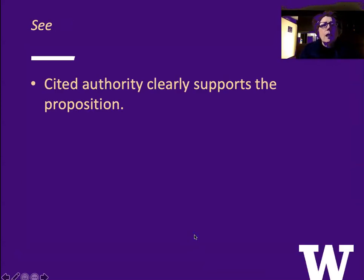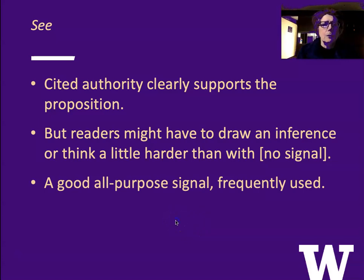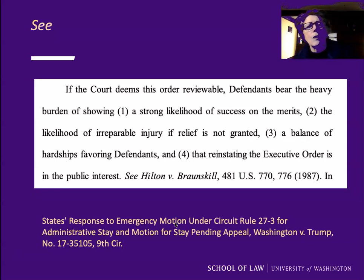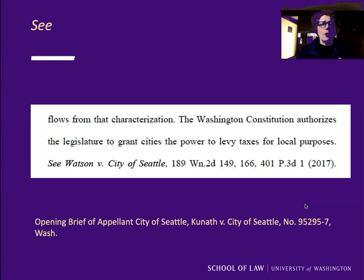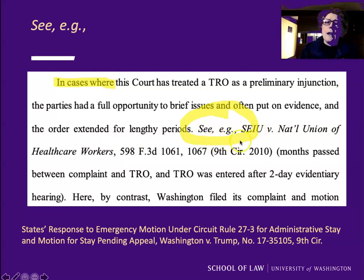'See' means that the cited authority clearly supports the proposition, but readers might have to draw an inference or think a little bit harder than when there's no signal. It's a good all-purpose signal and it's frequently used. Here's an example: 'If the court deems this order reviewable, defendants bear the heavy burden of showing [elements]. See, Hilton v. Bronskill.' Another example: 'The Washington Constitution authorizes the legislature to grant cities the power to levy taxes. See, Watson v. City of Seattle.' 'See, e.g.' combines that e.g. sense of 'there are lots of examples' with the general notion of 'see.' For instance: 'In cases where this court has treated a TRO as a preliminary injunction, [something has happened]. See, e.g., [case].' That's saying: I could give you other cases, but I'm giving you this one as an example.